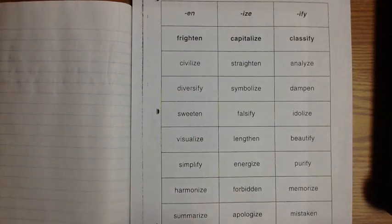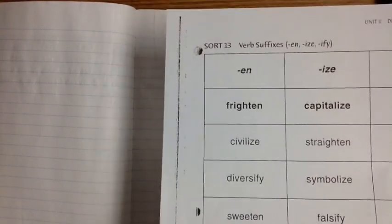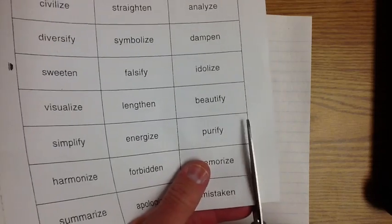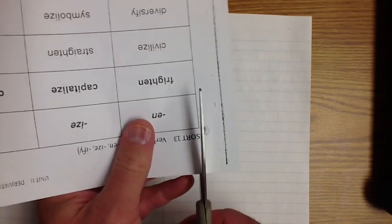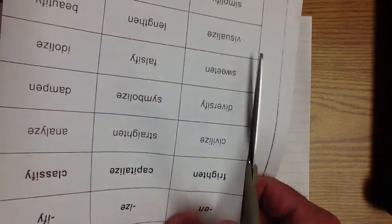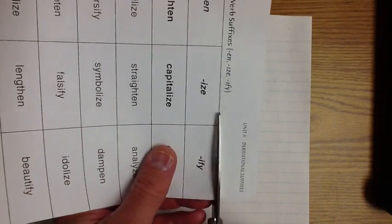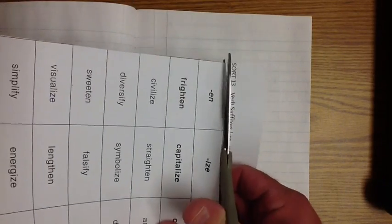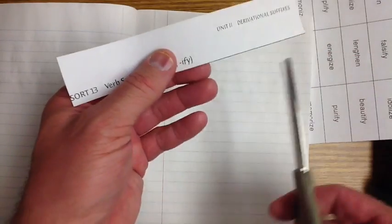Let's get started cutting our words out. Looks like we've got three exemplars today, and it looks like we're going to do verb suffixes. And what this means is that when we add these suffixes, most of the time, they're going to turn them into verbs. And what is a verb? Anybody know what a verb is? What does a verb do?